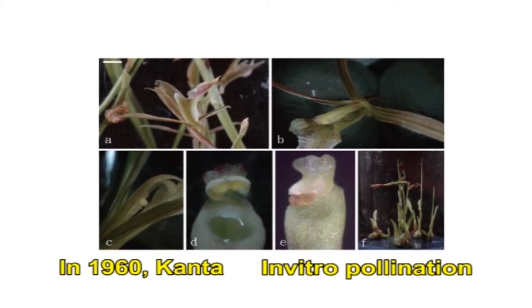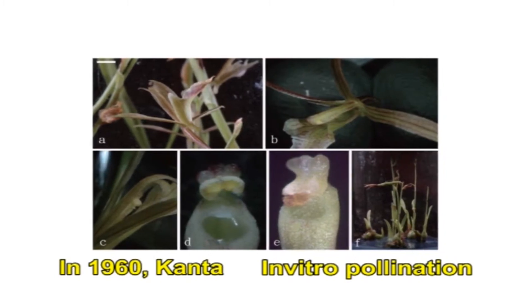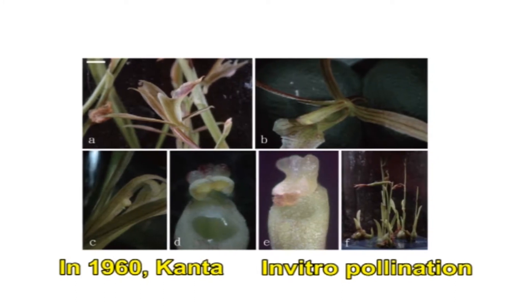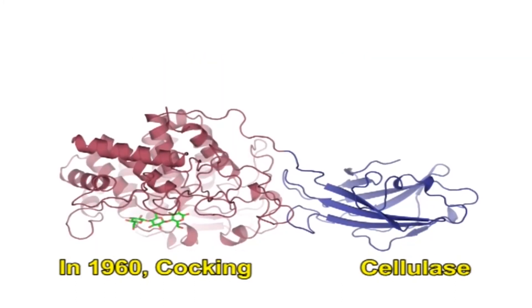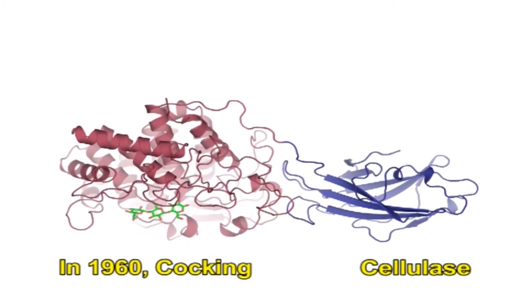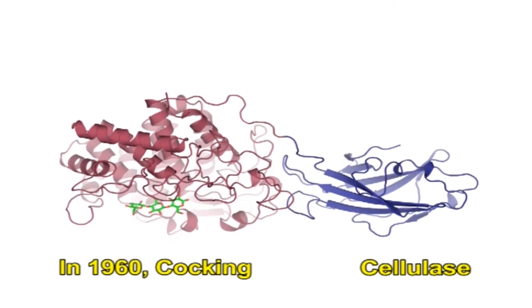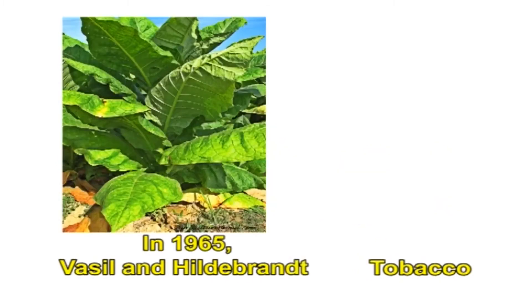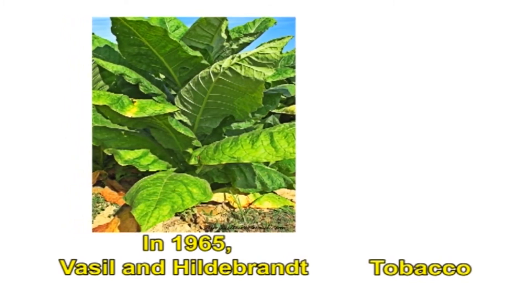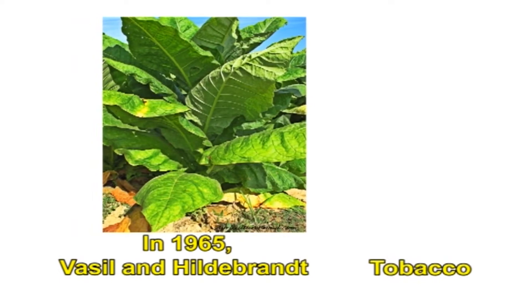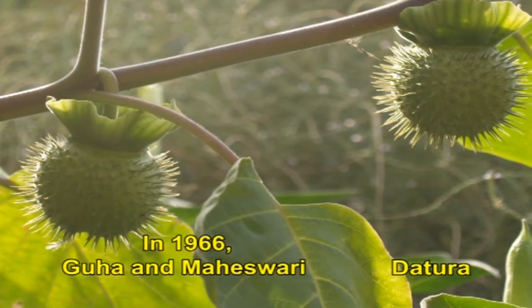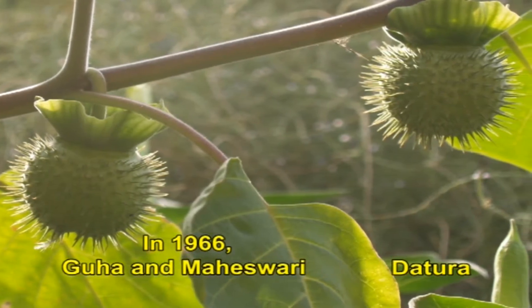In 1960, Kantha in India demonstrated successful test tube fertilization in Papaver Rhoeas for the first time through in vitro pollination. In the year 1960, Kokkin produced large quantities of protoplasts by using cell wall degrading enzymes called cellulase. In 1965, Vasil and Hyderbron raised whole plants starting from single cells of tobacco. In 1966, Kuha and Maheshwari in India produced haploid Datura plants from pollen grains.